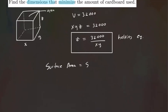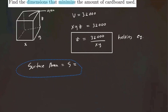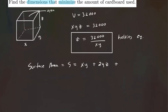Our surface area function — let's call it S — is going to be equal to the bottom, which is X times Y, plus the two side faces (front and back along Y): 2 times Y times Z, plus the two remaining side faces: 2 times X times Z. So S = XY + 2YZ + 2XZ. This is our surface area function.